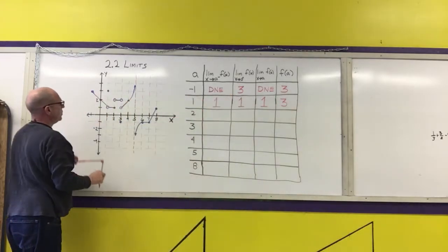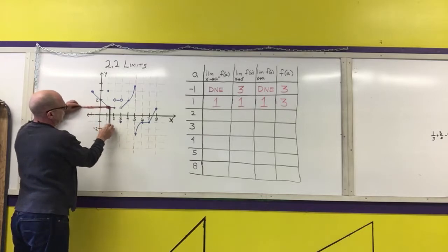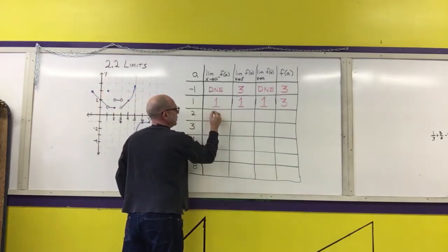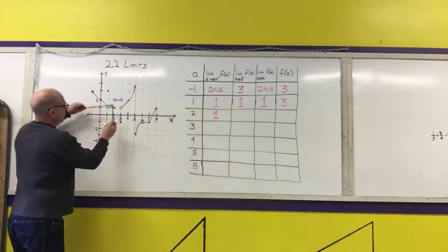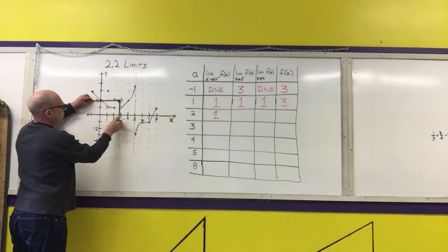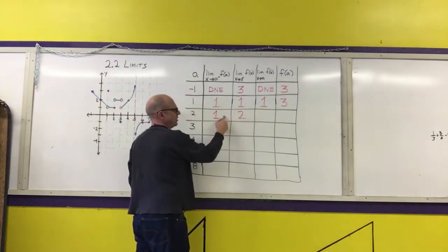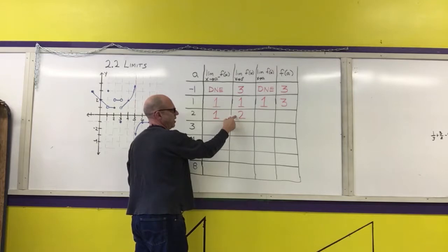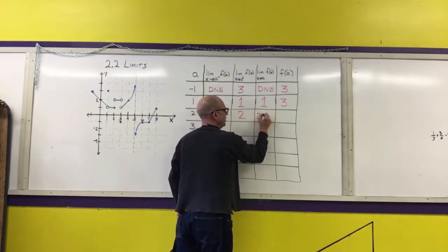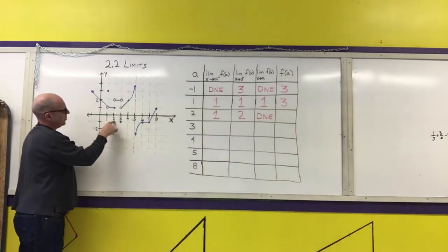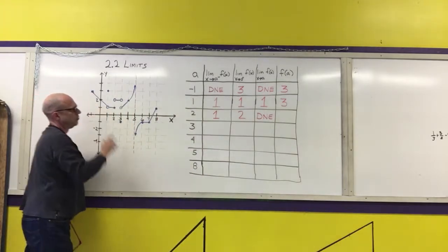At x = 2: approaching from the left, the y-value approaches 1. Approaching from the right, the y-value approaches 2. Because the two one-sided limits are not the same value, the two-sided limit does not exist. When we evaluate f(2), the value of the function is 1.